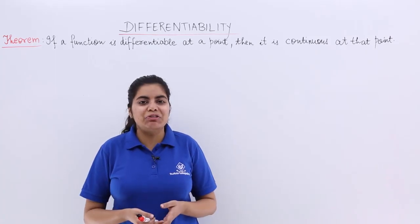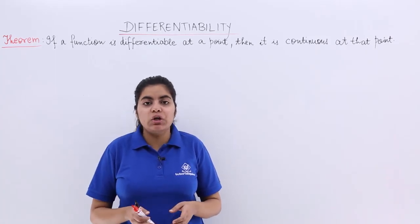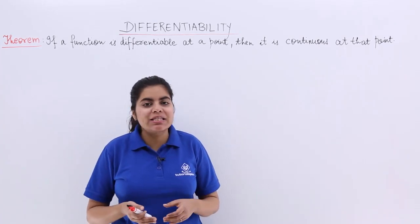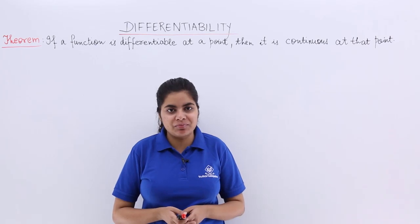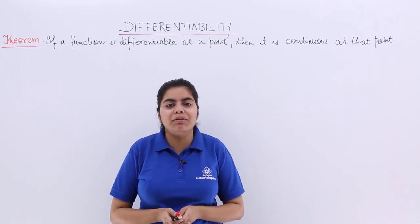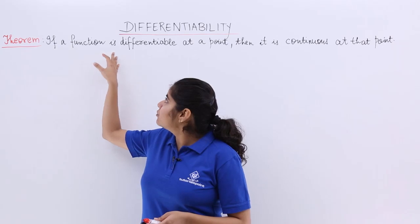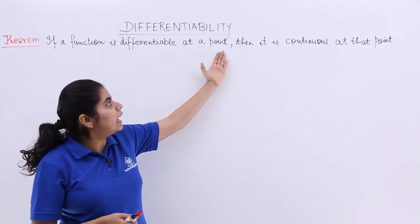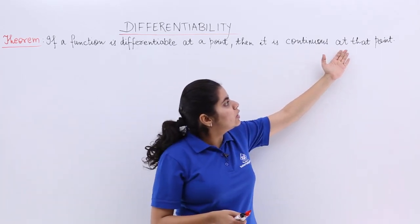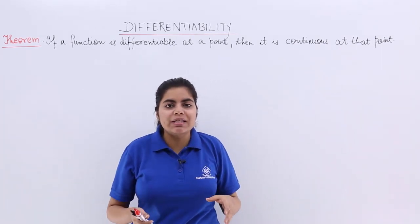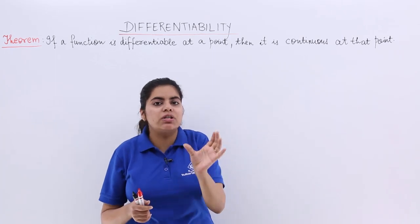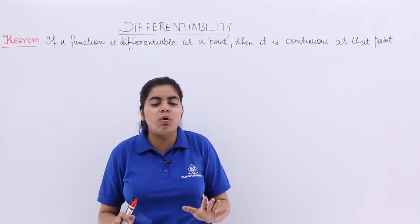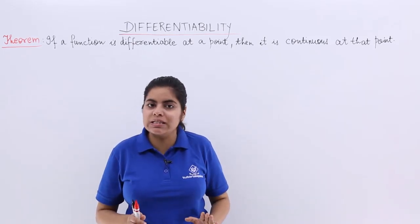In this video, let's see a theorem on differentiability. We already know the definition and the geometrical meaning of differentiability. This video is dedicated to the theorem — we'll see what it is and we'll see the proof of it. The theorem says: if a function is differentiable at any point, then it is continuous at that point. So if a function is differentiable, it will definitely be continuous. That is what we have to focus on in this video.